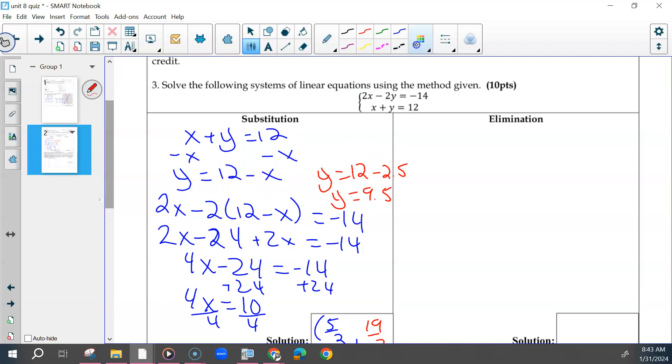And then again, elimination, you had a couple different ways to solve this. Some of us multiply this second equation by 2. Some of us multiply this by 4 and the first one by 2. It didn't matter. The easiest would probably be to multiply this by 2.